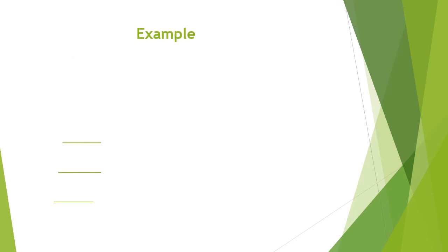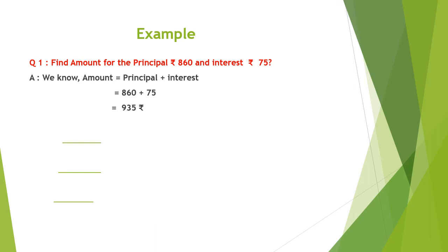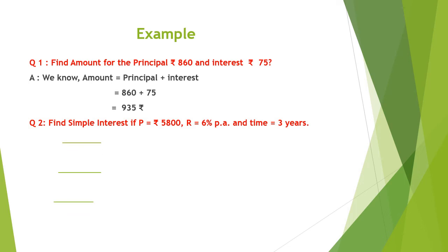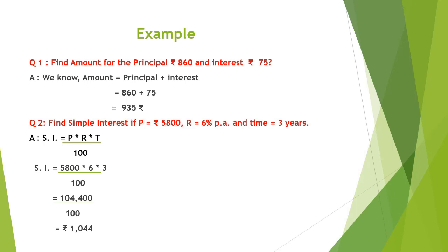Here is an example: find the amount for principal = ₹860 and interest = ₹75. We know Amount = Principal + Interest, so 860 + 75 = ₹935. Another example: find simple interest if P = ₹5800, rate = 6% per annum, time = 3 years. Using SI = (P × R × T) / 100: (5800 × 6 × 3) / 100 = 104400 / 100 = ₹1044. That is the simple interest on a principal of ₹5800 at 6% per annum.